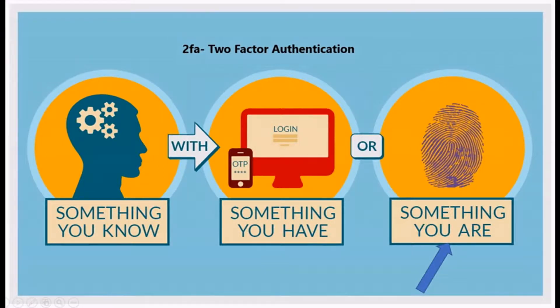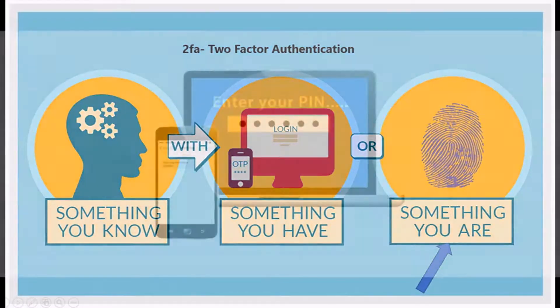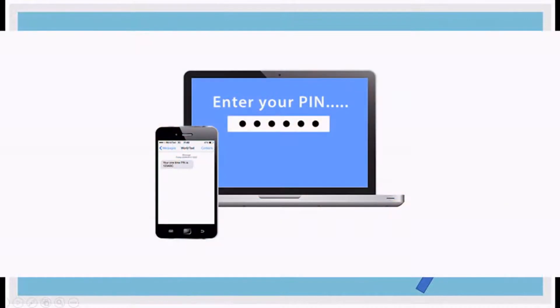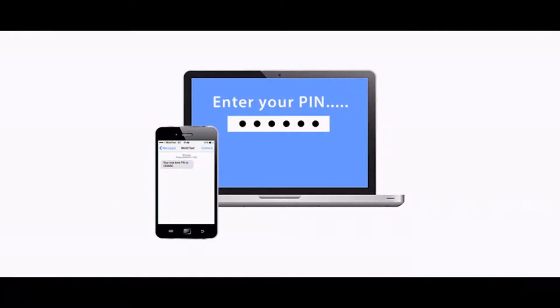So the first method would be telephone. You log into your bank account, they want to authenticate after you put in your password, give you a code that you type in — a PIN number — and then you get access to the account.